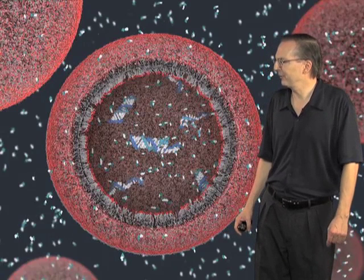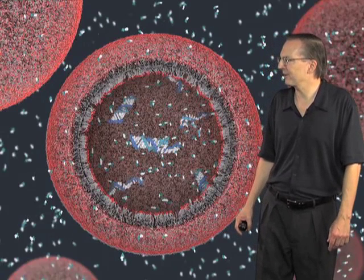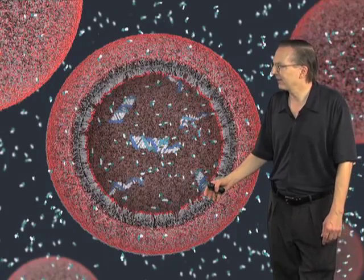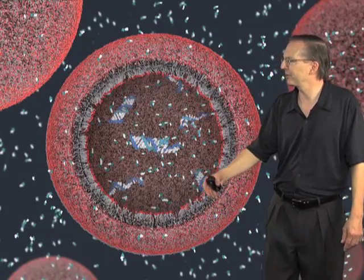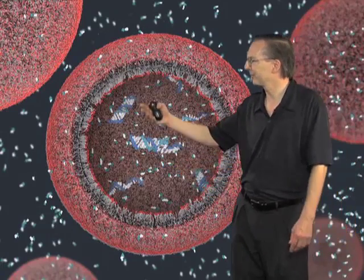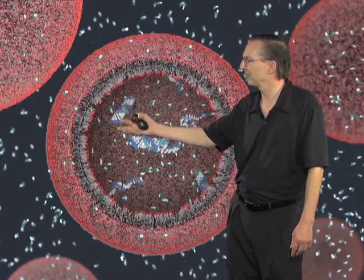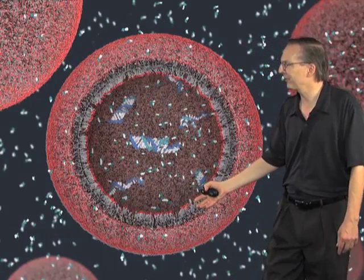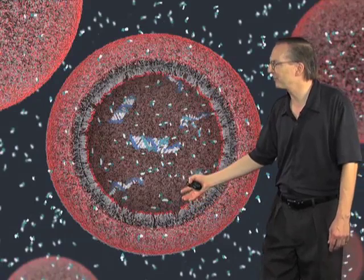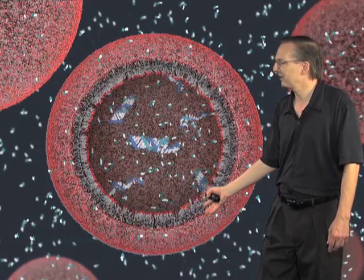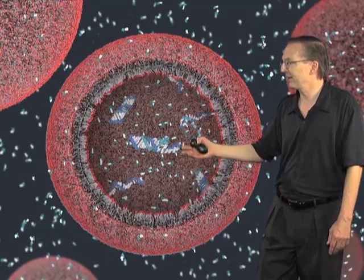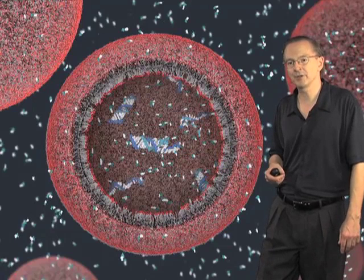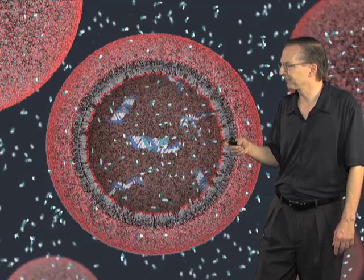If we could get to that point, then we would be back to being able to assemble this kind of model system — a model protocell — composed of a membrane, a compartment boundary, and replicating genetic material on the inside.